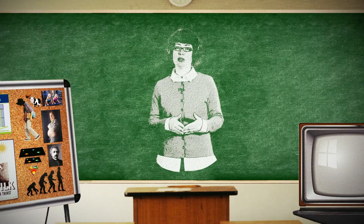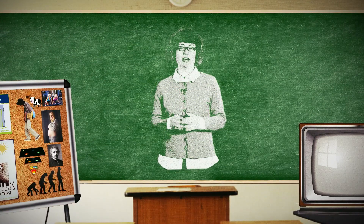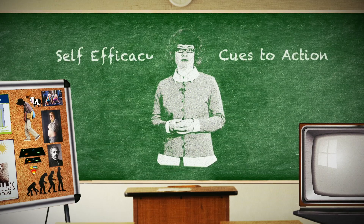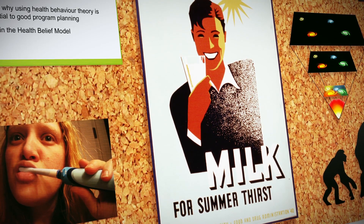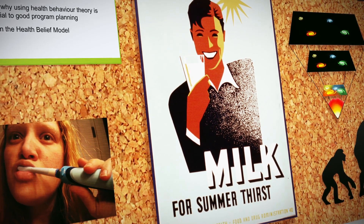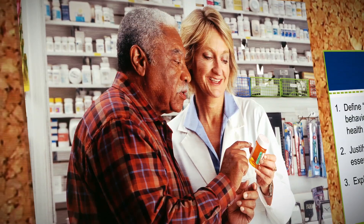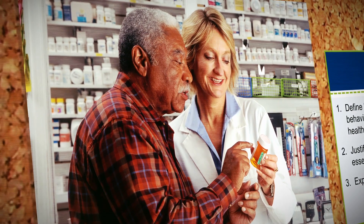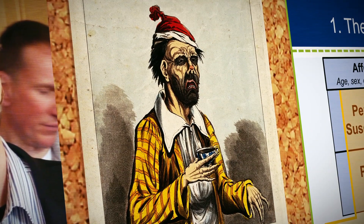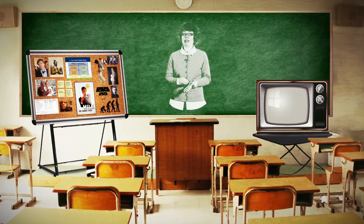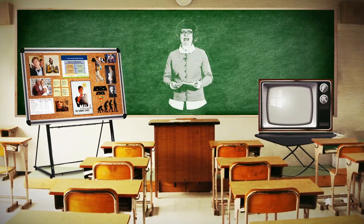There are two other important components of the health belief model: cues to action and self-efficacy. Cues to action serve as a trigger for behavior. Seeing a media campaign might serve as a cue to action. Others might include receiving advice, a reminder from a clinic, becoming aware of bodily sensations such as feeling overly tired or experiencing dizziness, or illness — your own or that of someone you know. Exposure to these sorts of cues to action increases a person's readiness to take action.